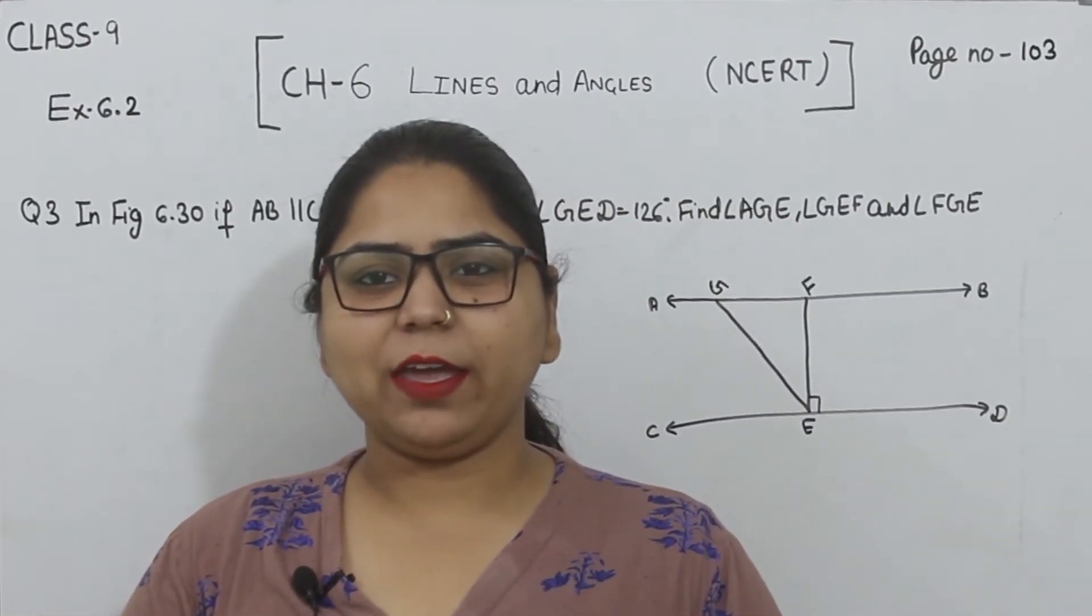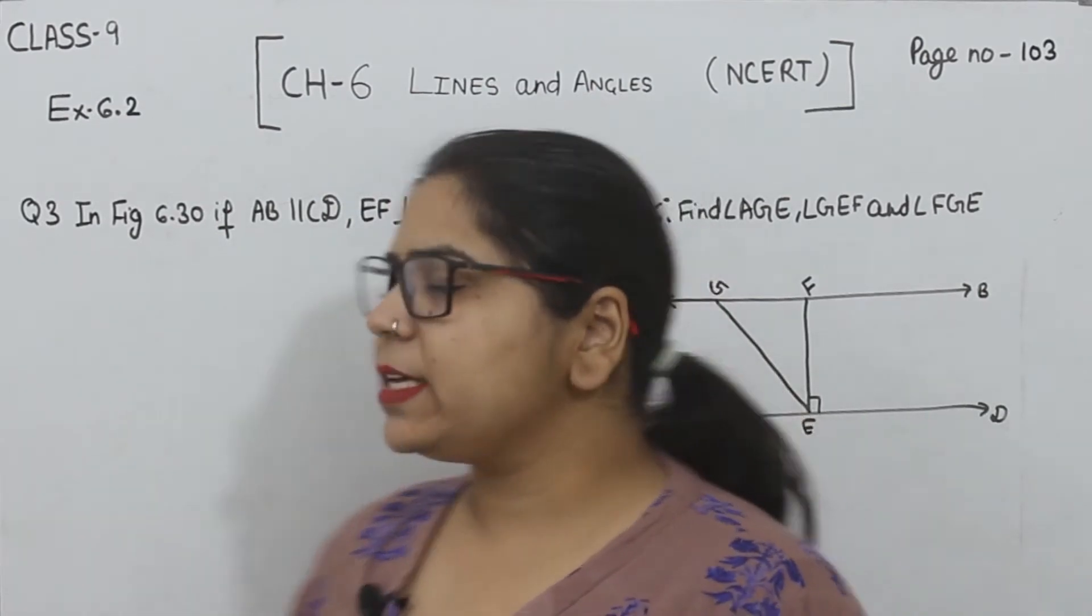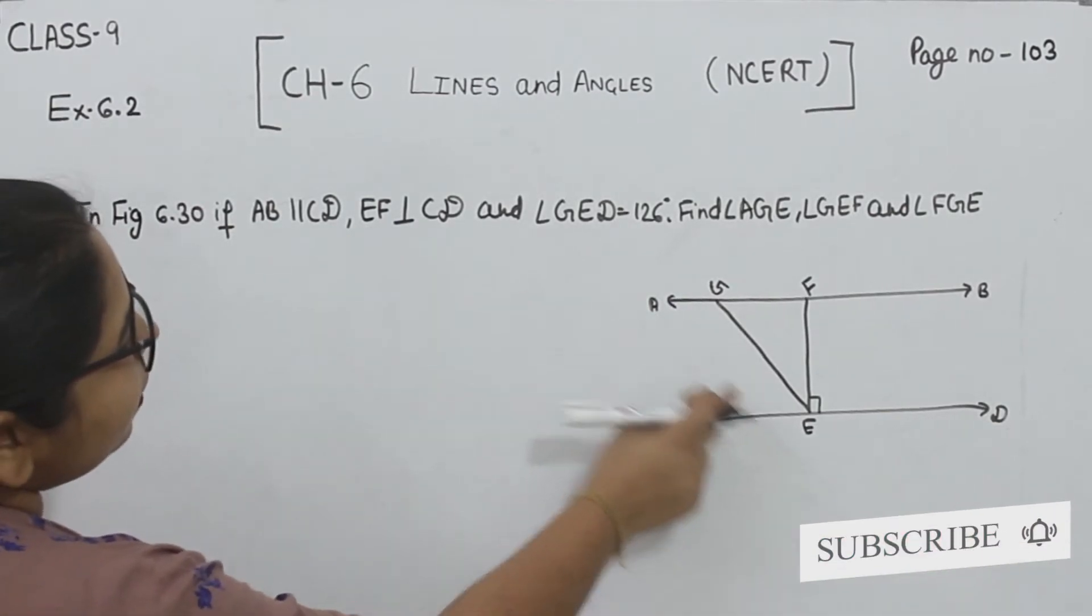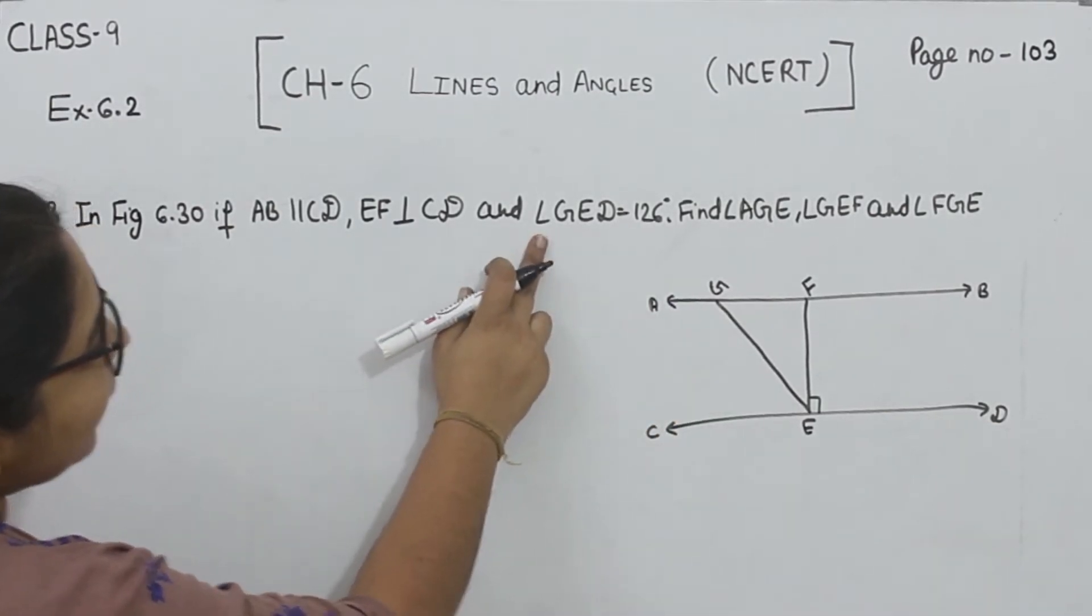Hello everyone, this is Preeti. We are here with another question of exercise 6.2, page number 103, question number 3. In figure 6.30, if AB is parallel to CD, EF is perpendicular to CD, and angle GED...